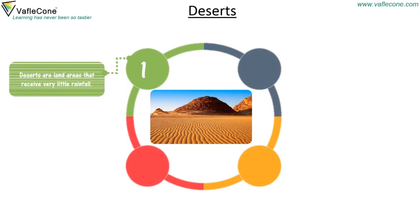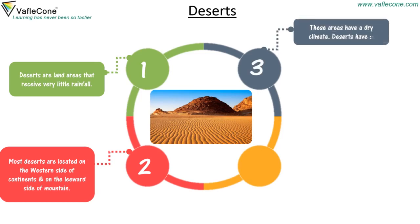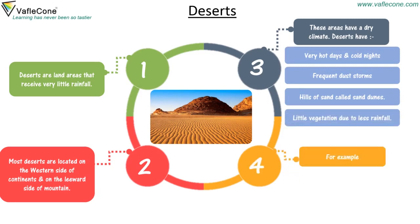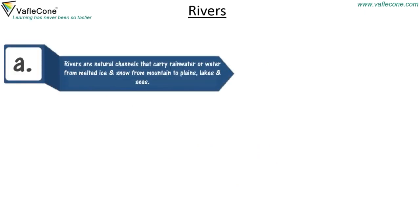Deserts. Deserts are land areas that receive very little rainfall. Most deserts are located on the western side of continents and on the leeward side of mountains. These areas have a dry climate. Deserts have very hot days and cold nights, frequent dust storms, hills of sand called sand dunes, and little vegetation due to less rainfall. Examples include the Sahara Desert, Kalahari Desert, Great Sandy Desert, Great Victoria Desert, Thar Desert, Arabian Desert, Atacama Desert, and Patagonian Desert.